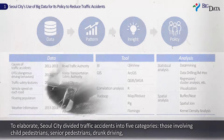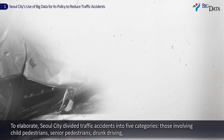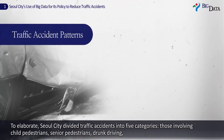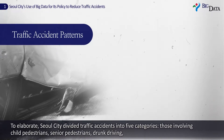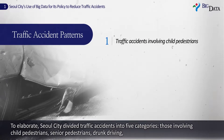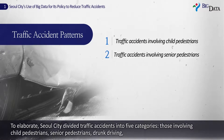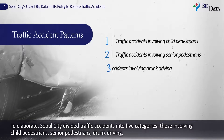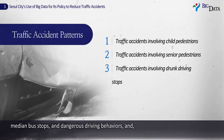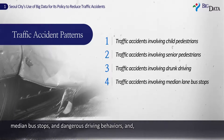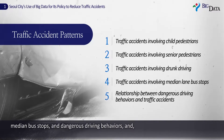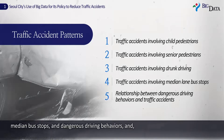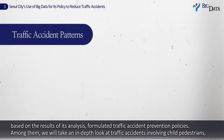To identify traffic accident patterns and formulate and implement traffic safety policies, Seoul City divided traffic accidents into five categories: those involving child pedestrians, senior pedestrians, drunk driving, median bus stops, and dangerous driving behaviors.